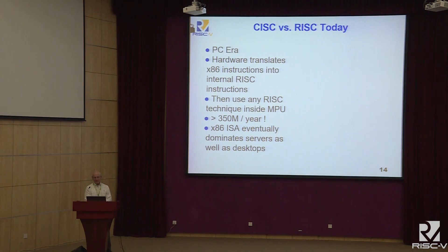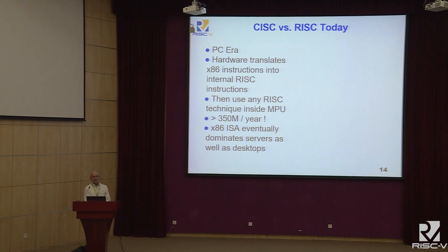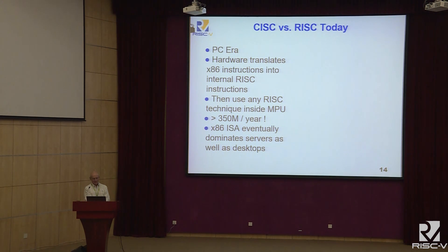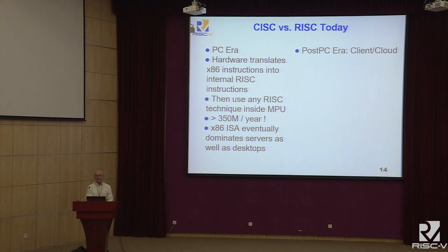The RISC-versus-CISC debate led to heated arguments at conferences. What Intel cleverly did in the PC era was take the complicated x86 instructions and translate them in hardware into simple RISC instructions, executing those internally. Any good idea from the RISC community could be adopted while maintaining binary compatibility — the idea IBM pioneered. Eventually Intel sold 350 million x86 chips per year and dominated all servers and desktops.